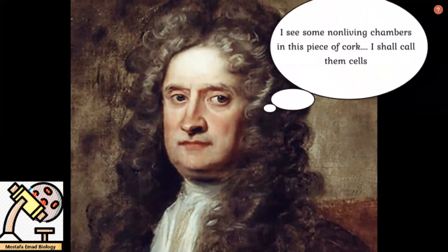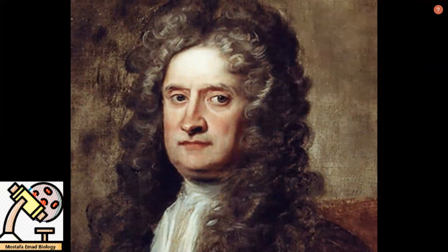In 1665, an English physicist named Robert Hooke looked through a primitive microscope at a thin slice of cork. What he saw, he called cells. They were not alive, and he couldn't see through them the way we can today. But it was the beginning.